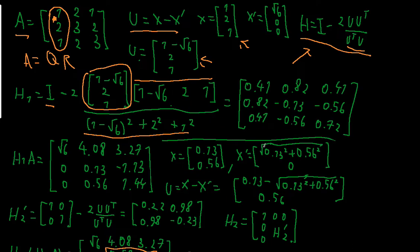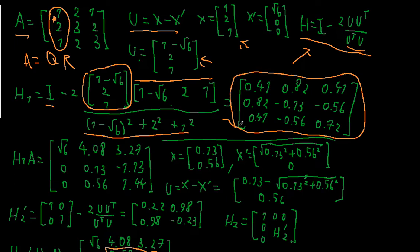After computing everything — you can do it by hand or plug it into a calculator — you should get the following matrix: [0.41, 0.82, 0.41], [0.82, -0.13, -0.56], [0.41, -0.56, 0.72]. This is our first Householder transformation.